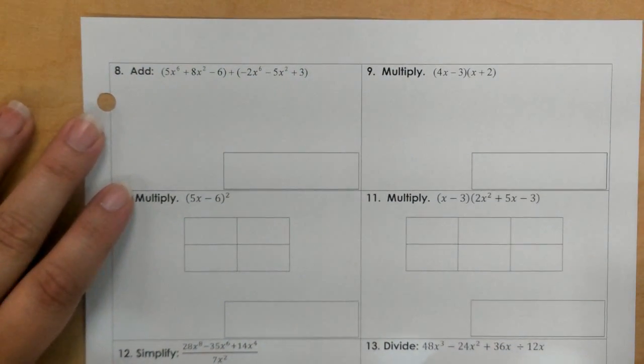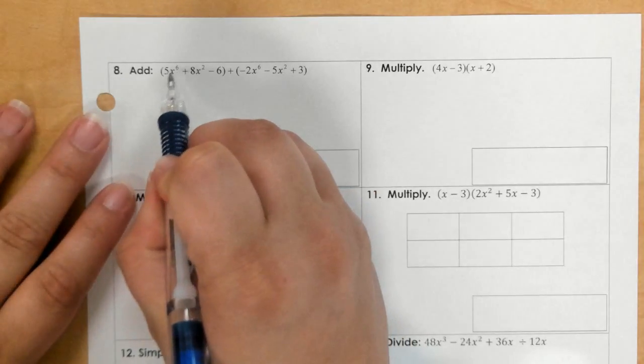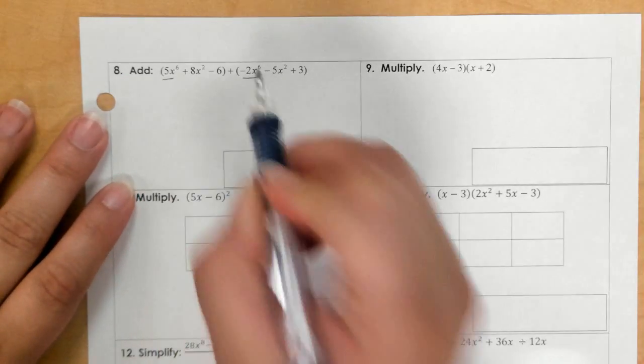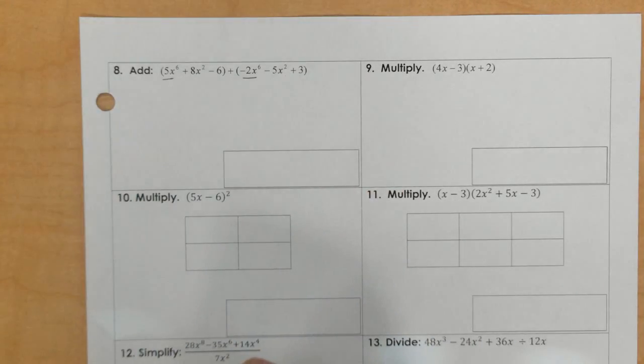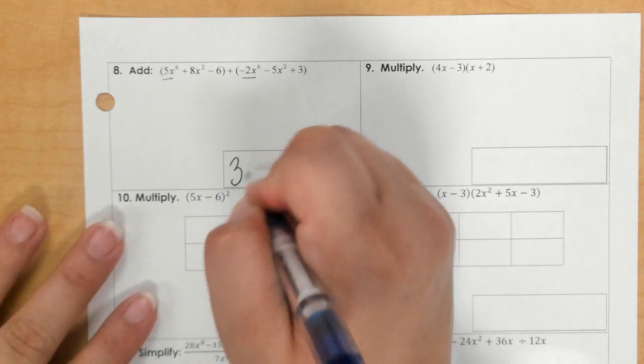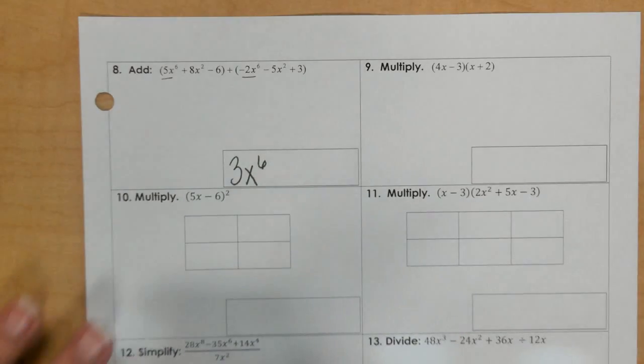For number 8, we need to add like terms. So I'm going to start with my biggest exponent, 6. So 5x to the 6 minus 2x to the 6, and that would get us to 3x to the 6.